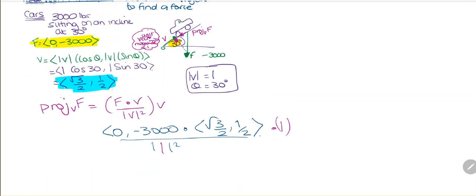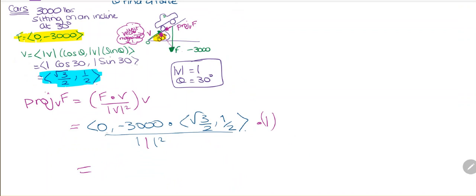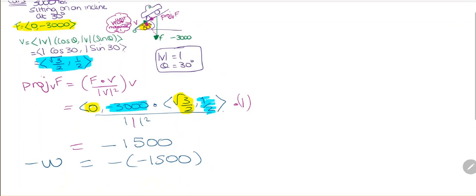So 0 times √3/2 is 0, and minus 3000 times 1/2 is minus 1500. We've multiplied by 1, so this is 1500. We can't have a negative here, so this minus makes it positive. The units are pounds.